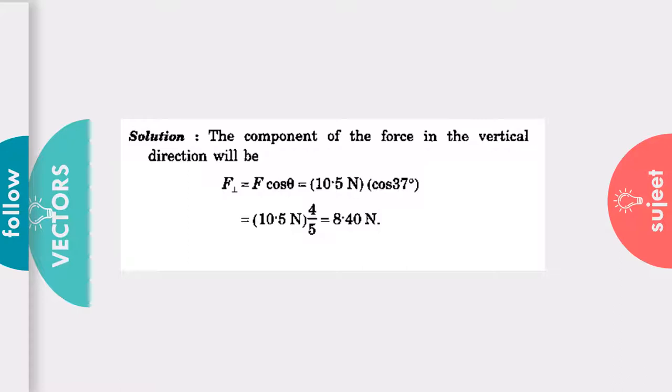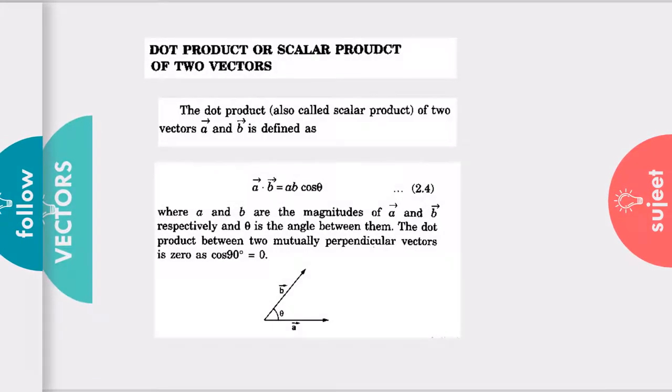The solution is F cos theta. As you know theta is 37 degrees, so cos 37, we know the value is 4 upon 5. So we will get 8.4 Newton, quite simple. If you have any problem please inbox me, I will help you.